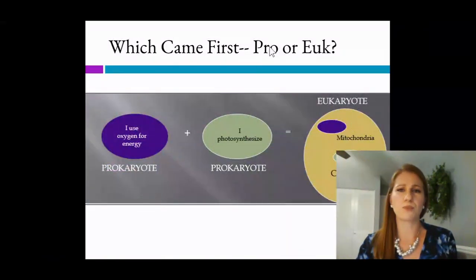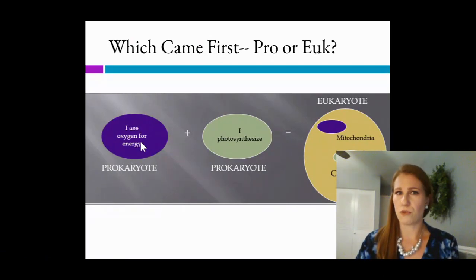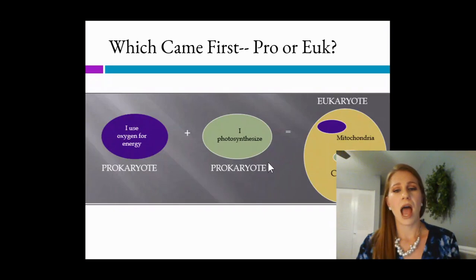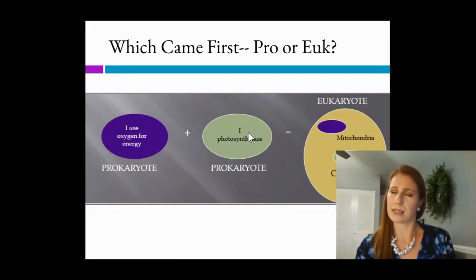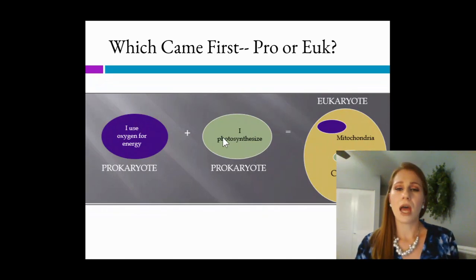Now if we look at this, which came first, pro or euk? Well, we've got a prokaryote that just uses oxygen for energy. That's the aerobic prokaryote. And then we have the photosynthetic prokaryote over here, which says I photosynthesize, which it does. And when those came together into another cell,